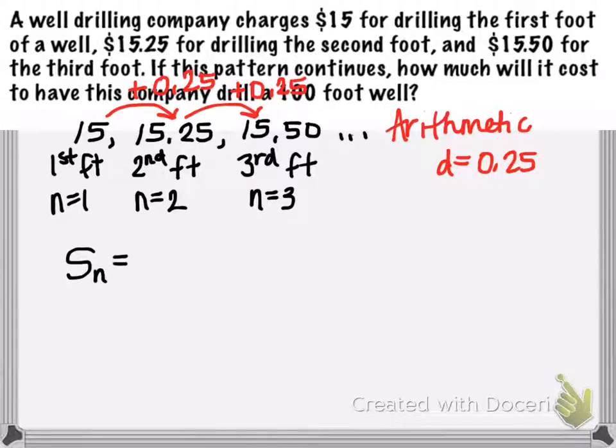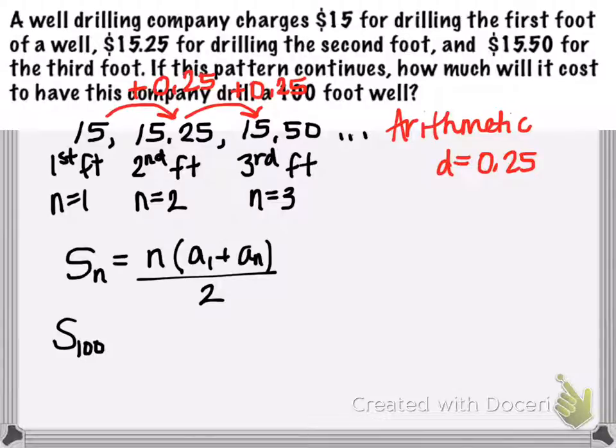Luckily, we have a nice arithmetic sum formula. We know that the sum of an arithmetic sequence can be found by multiplying the number of terms times the average of the first and last terms. So that would be a sub 1 plus a sub n all divided by 2. So we would like to sum up the first 100 terms of this sequence. That will be 100 times our first term, which is 15, what it costs to drill the first foot, plus a question mark—we don't know what the last term or the 100th term is of this sequence. And then all of this will get divided by 2.